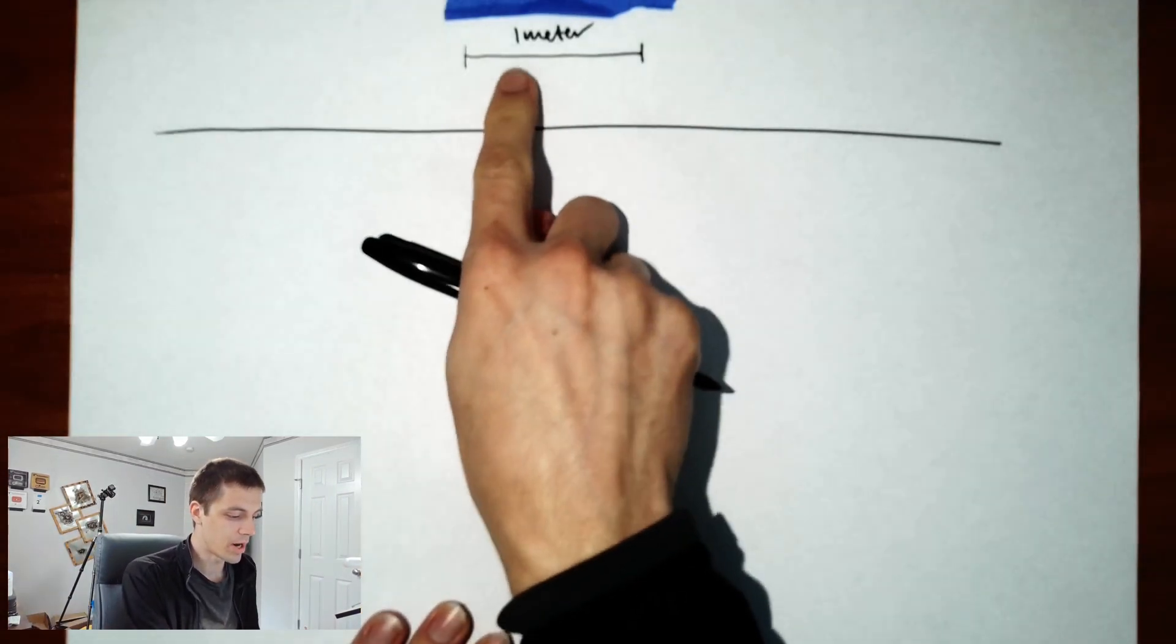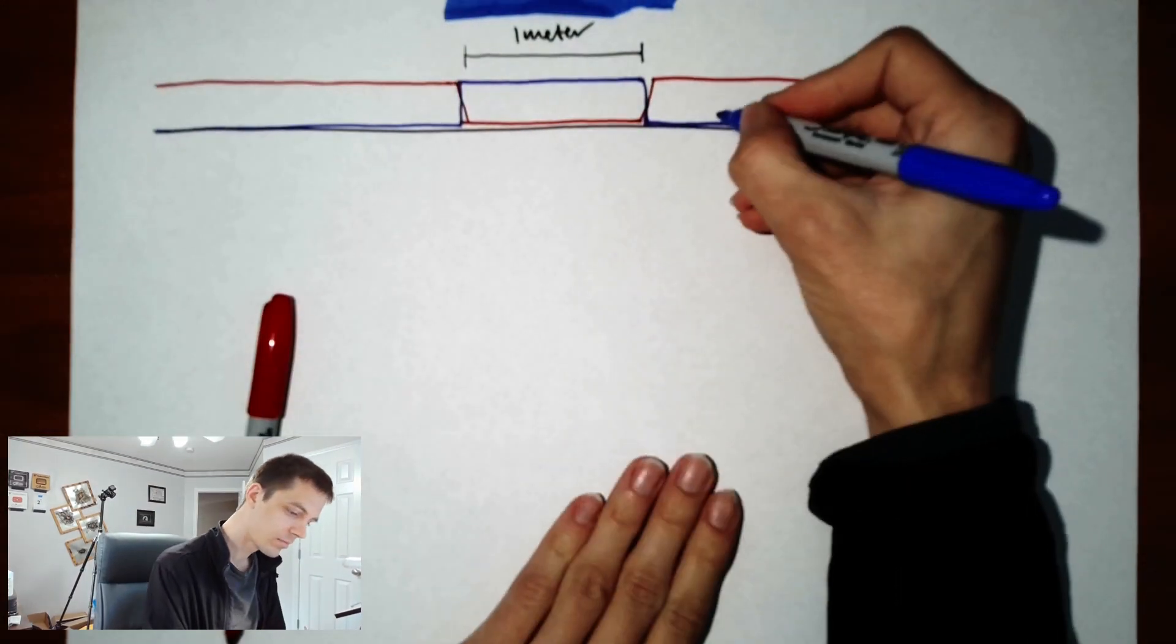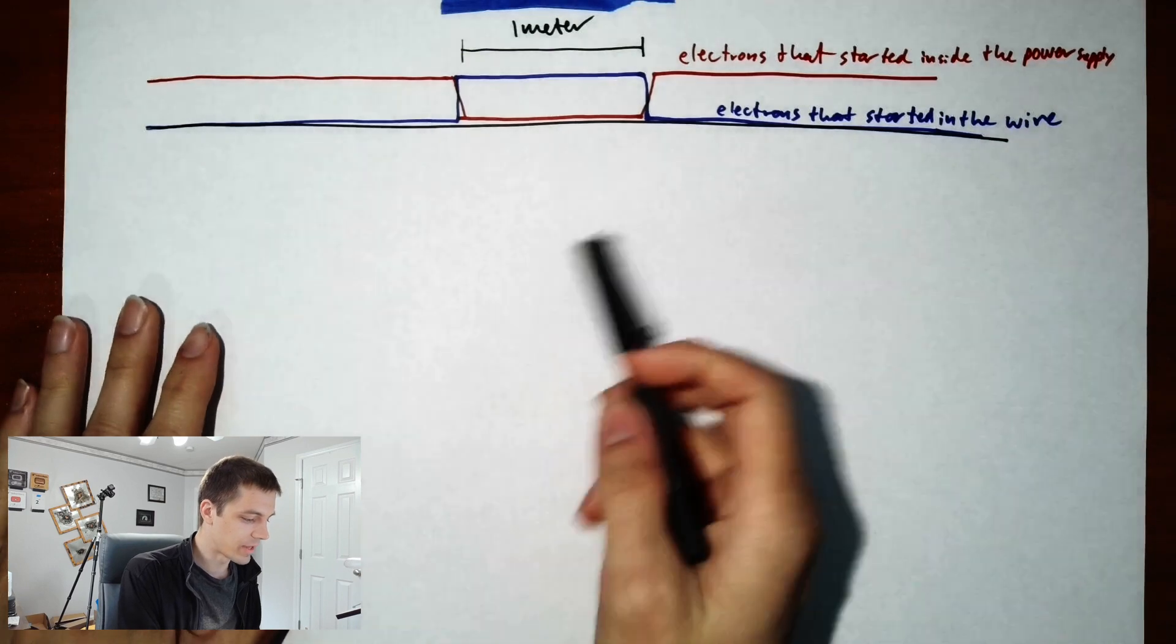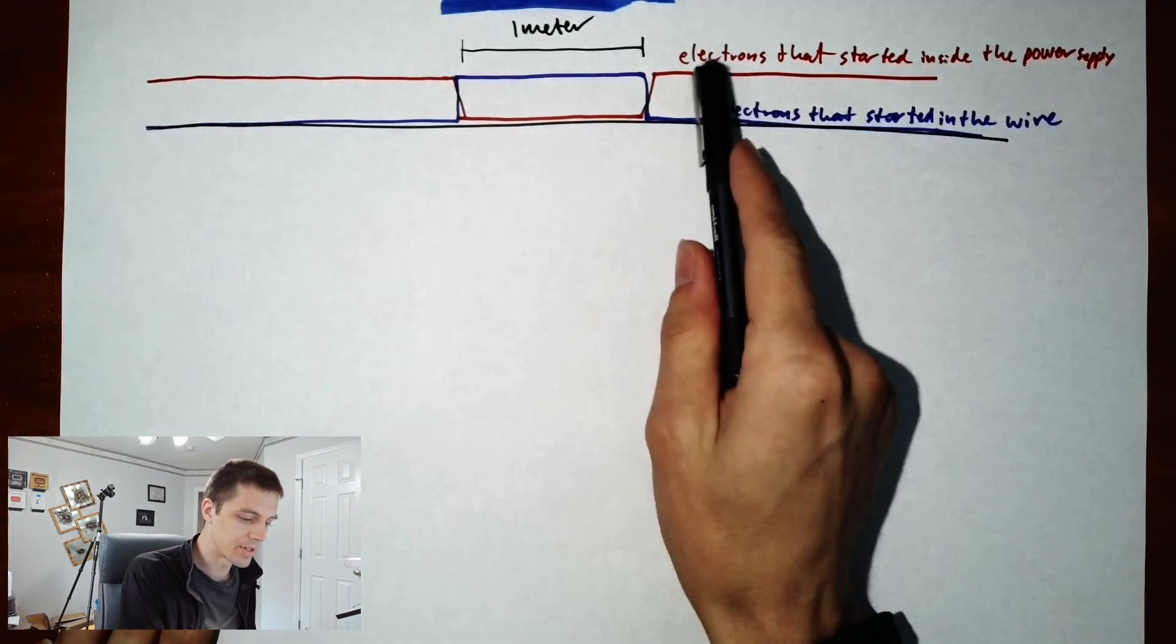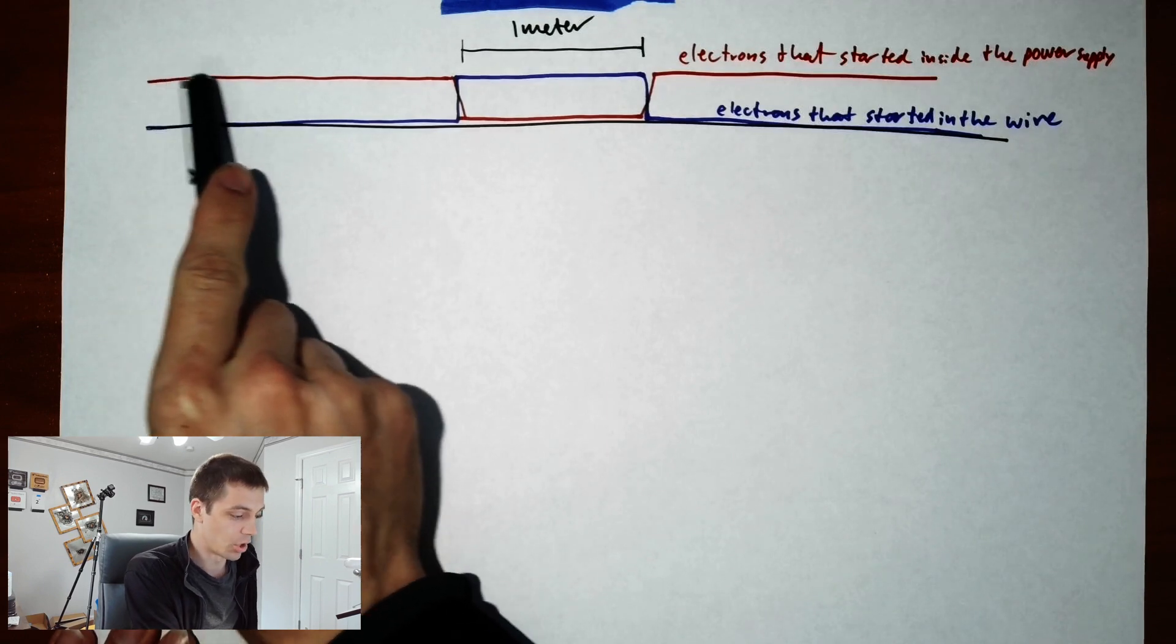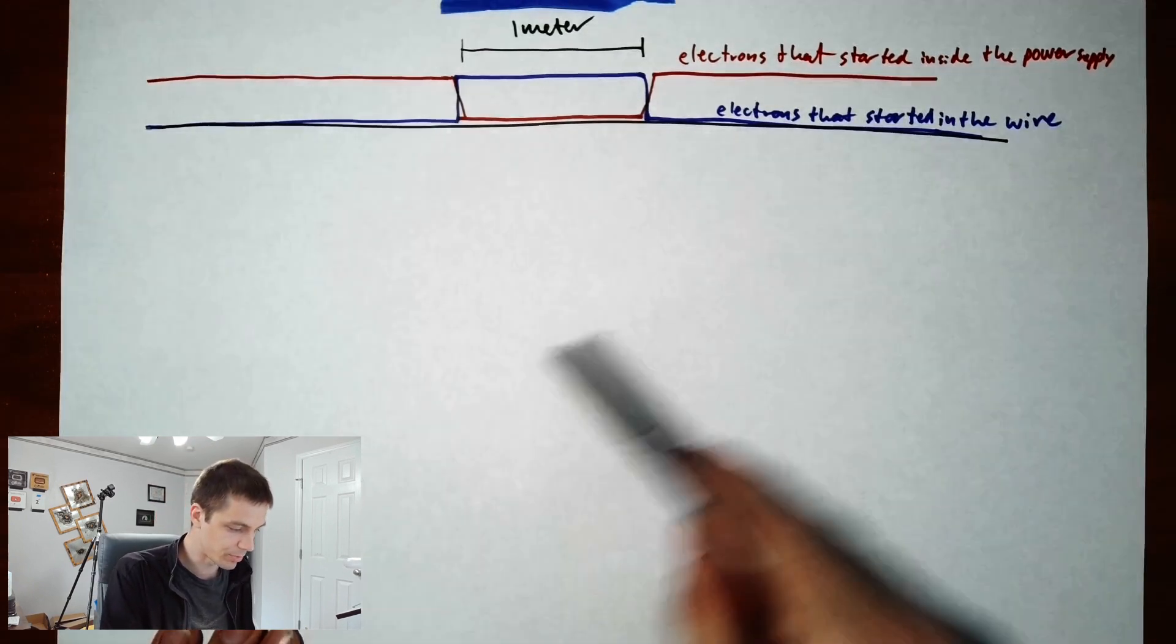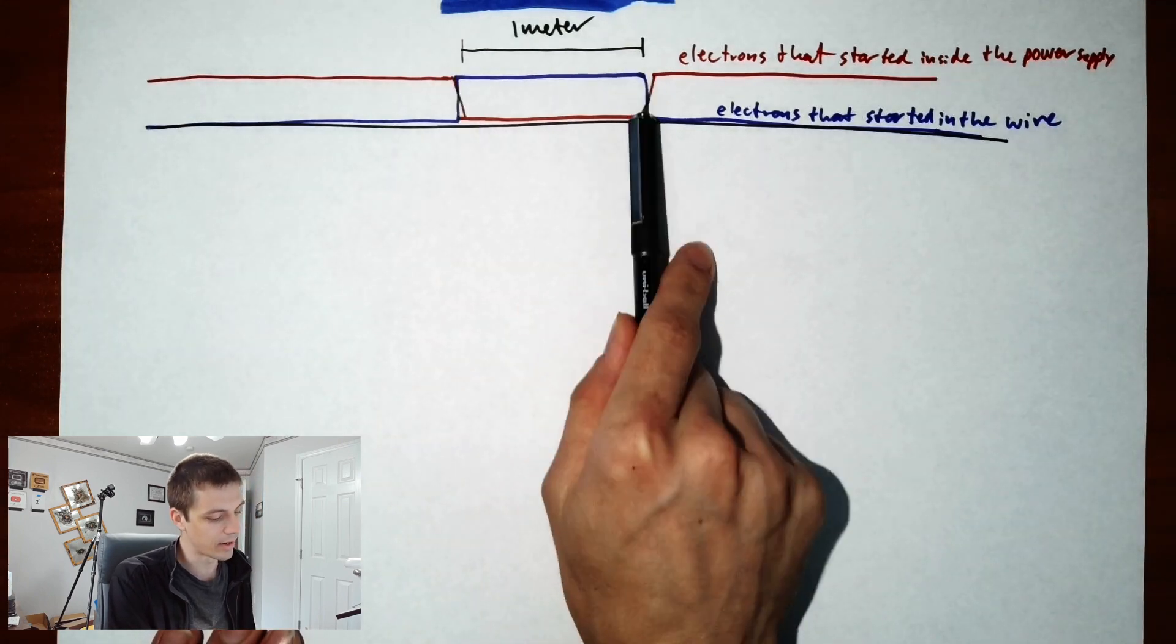Imagine that inside the power supply we had just meters of wire. Say we're trying to move all of the electrons out of one meter of wire. If you plot this out on a line and start with the same number of electrons everywhere, you can label those electrons. The red line here represents electrons that started inside the power supply, and electrons that start in the wire is just the opposite. It's nothing in the power supply, then all in the wire, then nothing in the power supply.